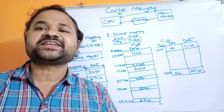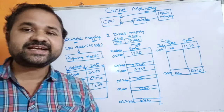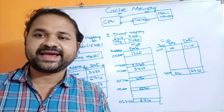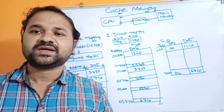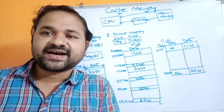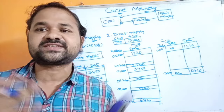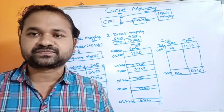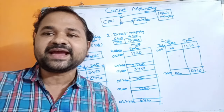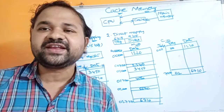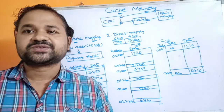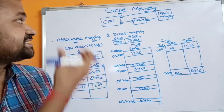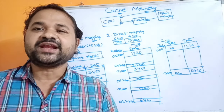Let's see the characteristics of cache memory. Cache memory is extremely fast — access time is very high speed. Cache memory is also very expensive, and one more important characteristic is it is very small in size, so cache memory can store only kilobytes of instructions.